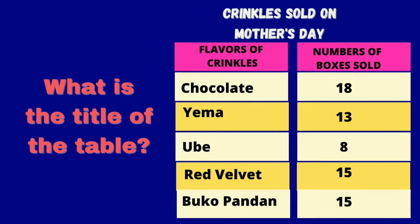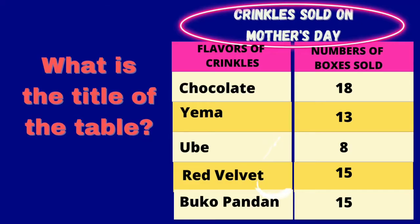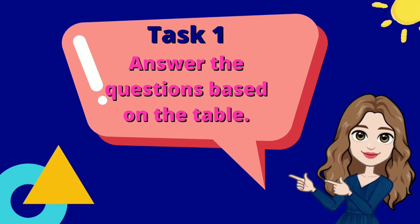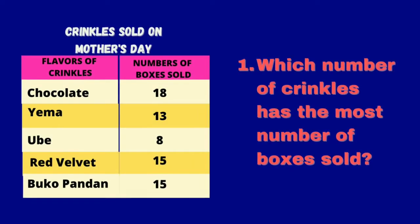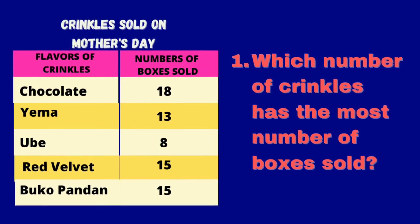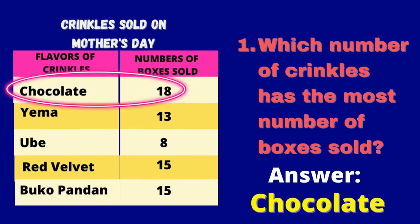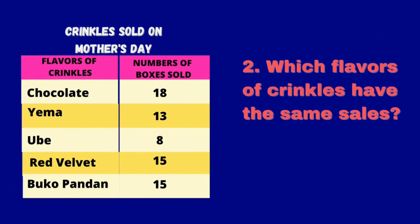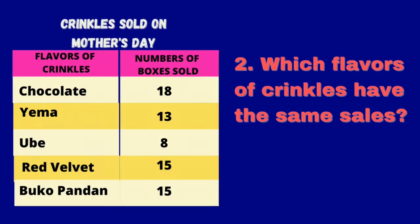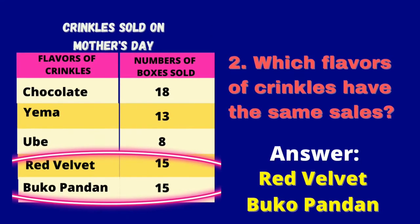What is the title of the table? Correct! The title of the table is Crinkles Sold on Mother's Day. Learning task 1: Answer the questions based on the table. Number 1: Which flavor of crinkles has the most number of boxes sold? The answer is Chocolate Flavor. Number 2: Which flavors of crinkles have the same sales? The answers are Red Velvet and Buko Pandan — they have the same 15 boxes sold.